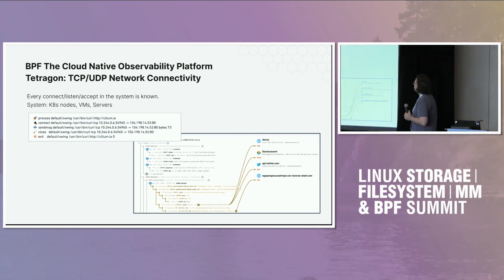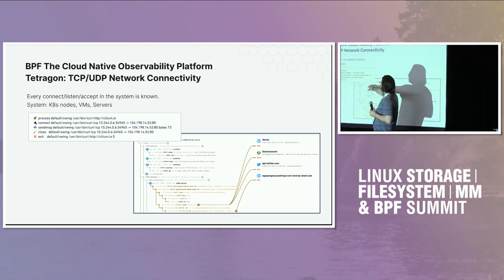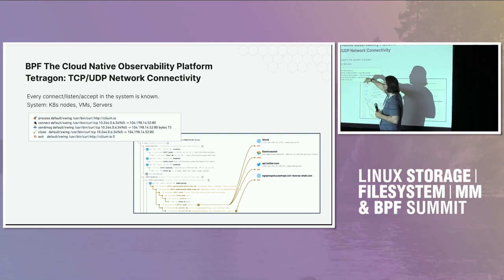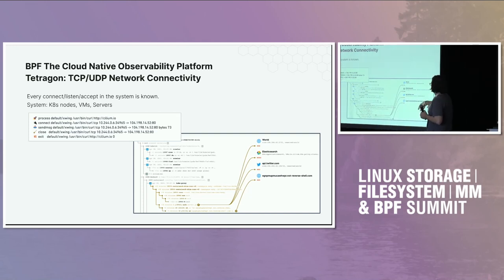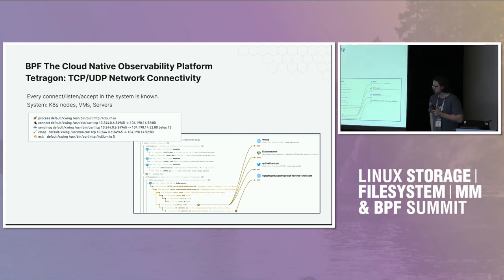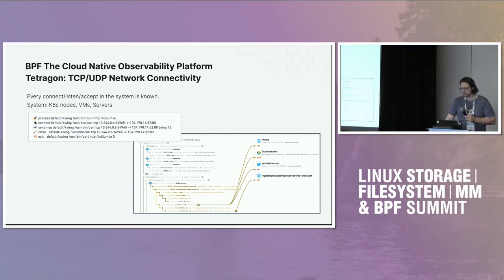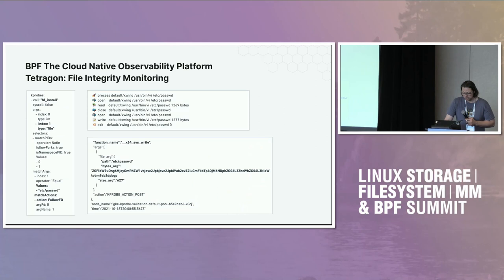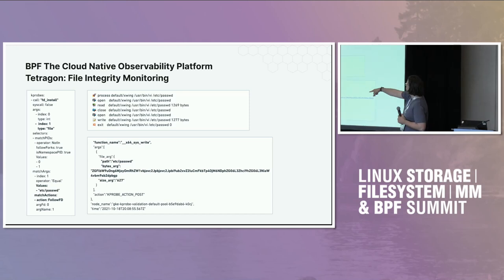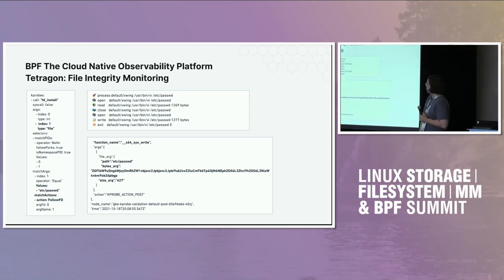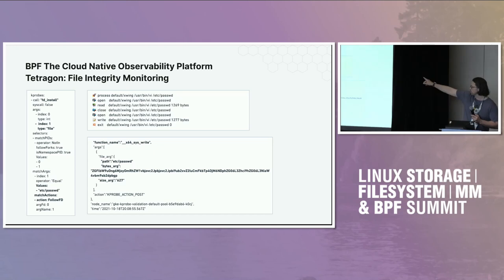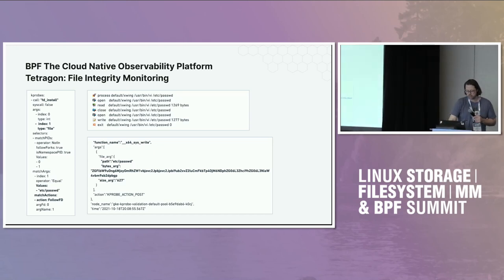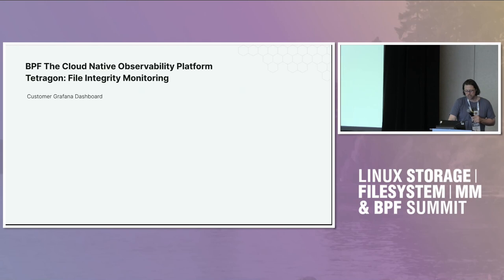People have written tools on top of Tetragon — there's a CLI you can connect to, and a GUI that shows the execution trace with pretty-printed info about connections. Another thing we can do is file integrity monitoring. If we hook fd_install, almost all kernel file descriptors go through there, so you can build a tree of events on what files are being opened and closed.